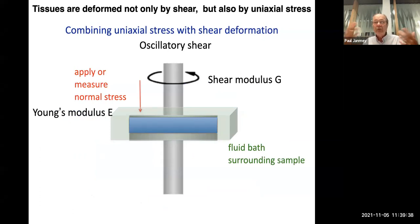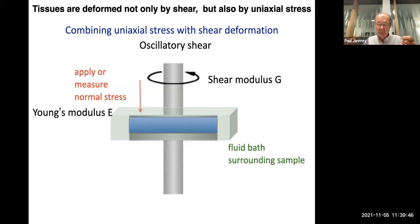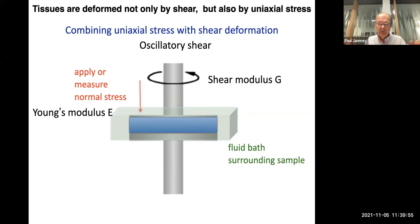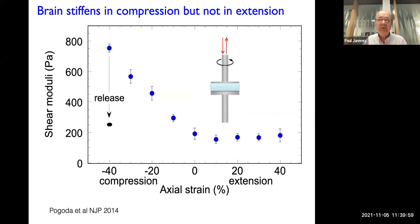We've also looked at what happens in uniaxial compression. We built a rheometer that has a little aquarium on it that allows us to measure the shear modulus superimposed on a static deformation - compression or extension. The little aquarium around it is so that liquid can flow in and out if the sample wants to change volume.